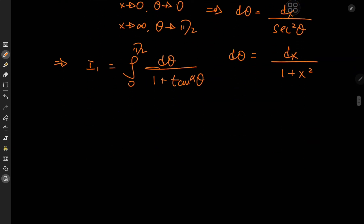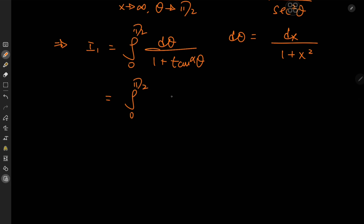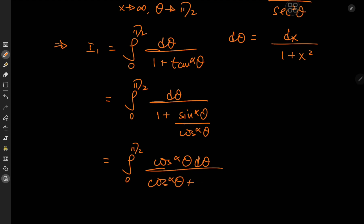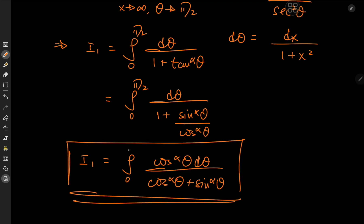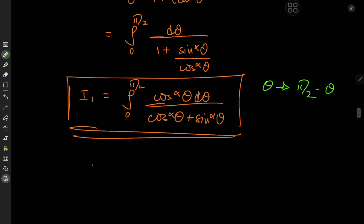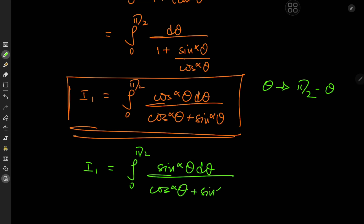This is straightforward — we expand tan as sin over cos, giving us the integral from 0 to π/2 of dθ over (1 + sin^α θ / cos^α θ). Multiplying upstairs and downstairs by cos^α θ gives the integral from 0 to π/2 of cos^α θ dθ over (cos^α θ + sin^α θ). That's one version of I₁. For another version, we perform the phase shift θ → π/2 − θ, under which sines and cosines swap, giving I₁ as the integral from 0 to π/2 of sin^α θ dθ over (cos^α θ + sin^α θ).